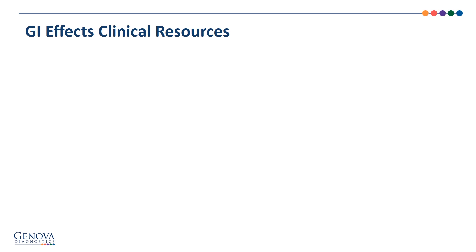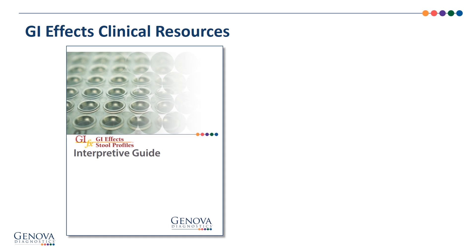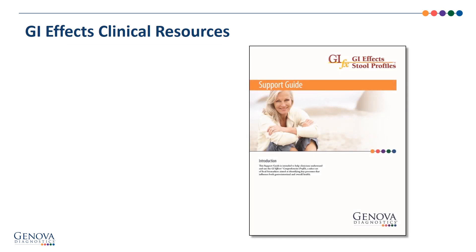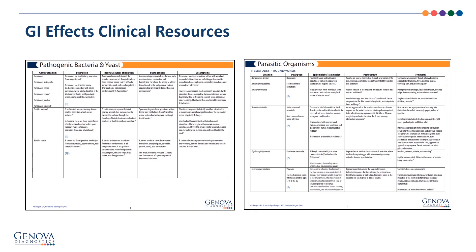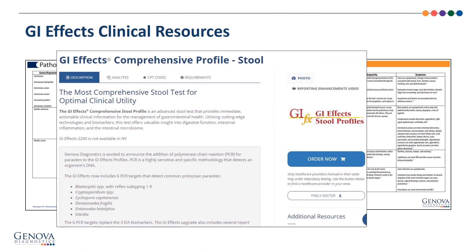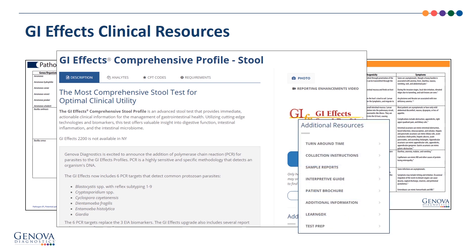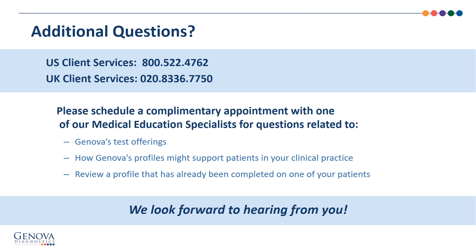We have an interpretive guide which is brief and shows flowcharts to help with decision making. The GI effects support guide is longer and more detailed about each biomarker. We have a pathogenic bacteria and yeast chart and a parasitic organisms chart that includes a description, epidemiology, pathogenicity, and symptoms. These resources can be found on the GI effects product page under additional resources. Feel free to contact client services with additional questions or if you need assistance setting up a MyGDX account. We also offer complimentary appointments with our medical education specialists to answer questions related to our testing, including choosing the right test and reviewing patient test results. We look forward to hearing from you.